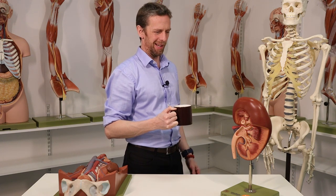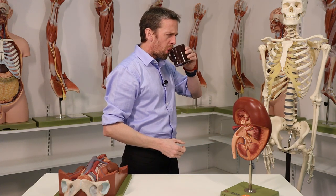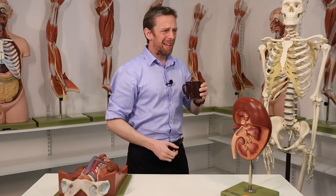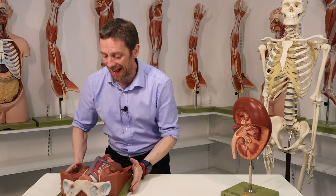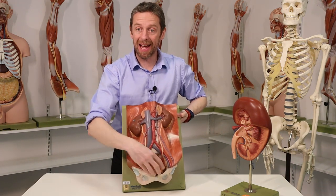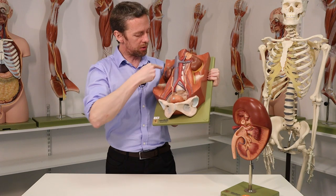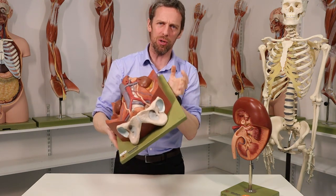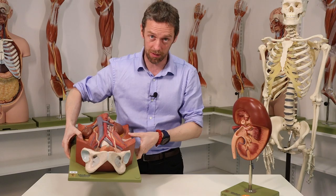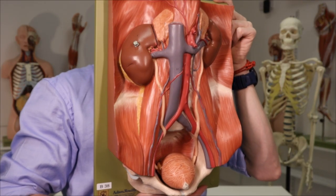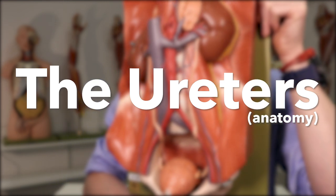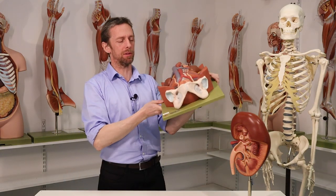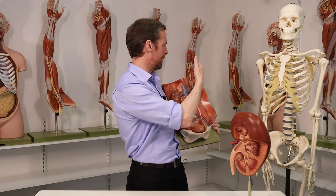Lots of mysterious noises again today — nothing ten cups of tea can't fix. We've looked at the kidneys, we've looked at the bladder, so it would be rude not to link them up with the ureters. We should have a look at the anatomy of the ureters. Look at all these lovely new shiny, very expensive models — we're getting more students, so we need more anatomical things for students to study.